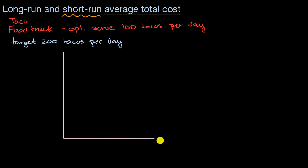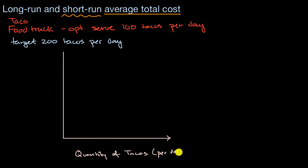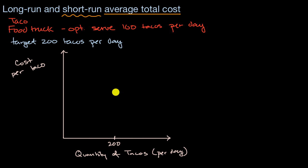Let me make some axes here. The horizontal axis is quantity of tacos per day, and the vertical axis is cost per taco. Since you're optimizing for 200 tacos per day, you want to minimize your cost per taco. At 200 tacos per day, that happens with two food trucks, giving us an average total cost of 50 cents per taco.